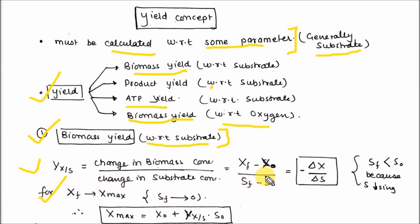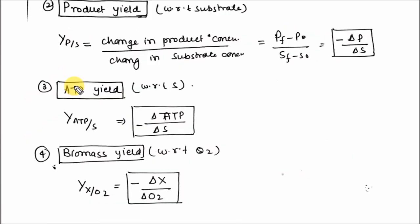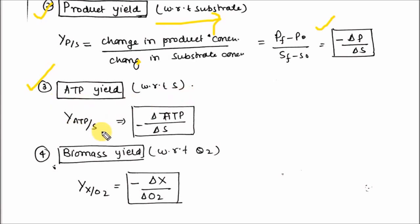For maximum biomass X_max, Sf tends to 0 — that is, all substrate is consumed by the microbes — and Xf tends to X_max. Manipulating this equation gives X_max = X₀ + Y_x/s × S₀. For product yield Y_p/s, it is the change in product concentration divided by change in substrate concentration: (Pf - P₀)/(Sf - S₀) = minus ΔP/ΔS. Similarly, ATP yield Y_ATP/s = minus ΔATP/ΔS, and biomass yield with respect to oxygen Y_x/O₂ = minus ΔX/ΔO₂.